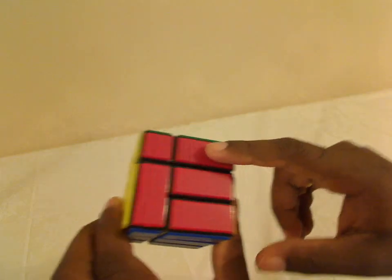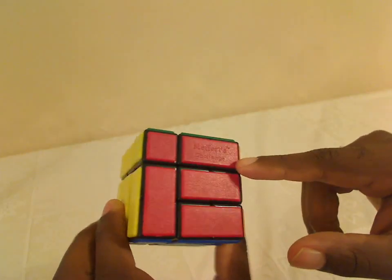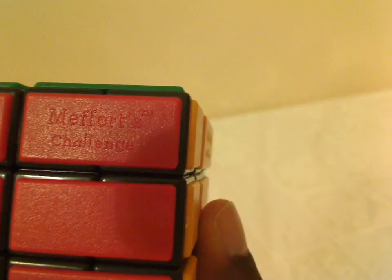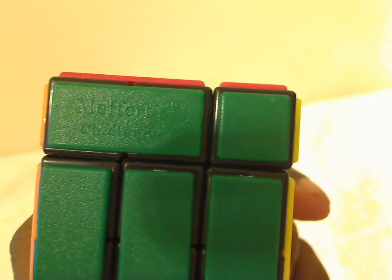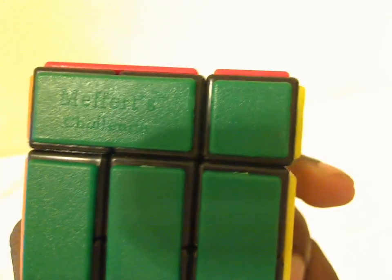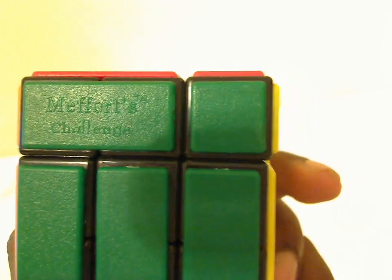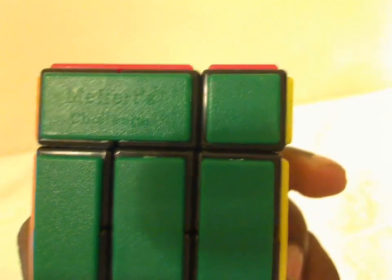On each side of these bandage cubes, you'll see the words 'Meffert's Challenge.' He put it on every single side. I'm trying to get out of the shadow so you can see it. Here's the red one, and here's a green side as well. You can see the imprint of 'Meffert's Challenge' on there. It's on every single side, and the turning on the puzzle is really great.